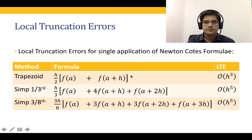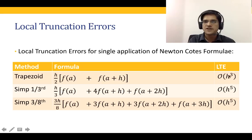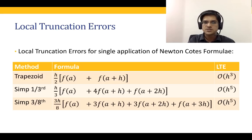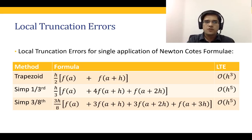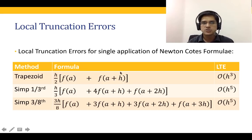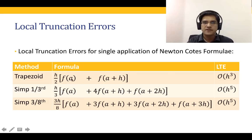The local truncation error in Simpson's one-third rule is h⁵, whereas in the trapezoidal rule it is h³. Therefore in this example, Simpson's one-third rule gives better results. Next, we take the trapezoidal rule and calculate the integral for different values of h, starting with a single application each time, to study convergence.